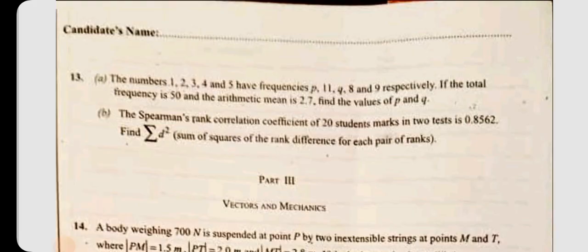Question 13. The numbers 1, 2, 3, 4 and 5 have frequencies p, 11, q, 8 and 9 respectively. If the total frequency is 50 and the arithmetic mean is 2.7, find the values of p and q.